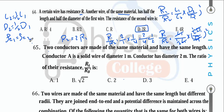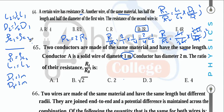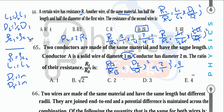Two conductors of same material (ρ1 = ρ2) and same length (L1 = L2). Conductor A has diameter 1 m, conductor B has diameter 2 m. R_A/R_B = (d_B/d_A)² = (2/1)² = 4. So R_A = 4·R_B.